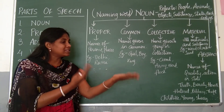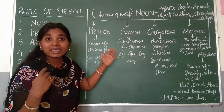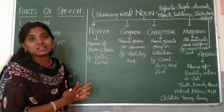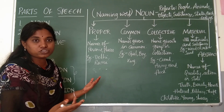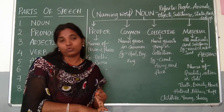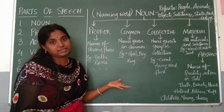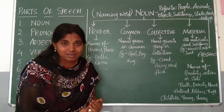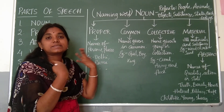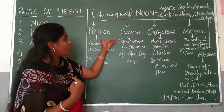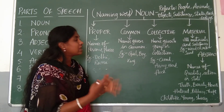Common noun refers to names given in common — in general, irrespective of gender. For example: girl, boy, teacher, king, principal, minister, MLA, MP, counselor. We call them 'teacher' in general without specifying male or female teacher. All those names given commonly and generally, irrespective of gender, come under common noun. Examples include girl, boy, king, and so on.